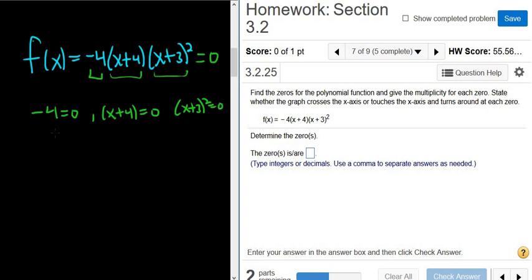Showing all the steps in this example, so this is no solution here. Negative 4 is never equal to zero. Here you subtract 4, so you get x equals negative 4. Here you take the square root. You get x plus 3, the square root of zero is zero, so you get plus or minus zero, which is just zero. So you subtract the 3, so you get negative 3.